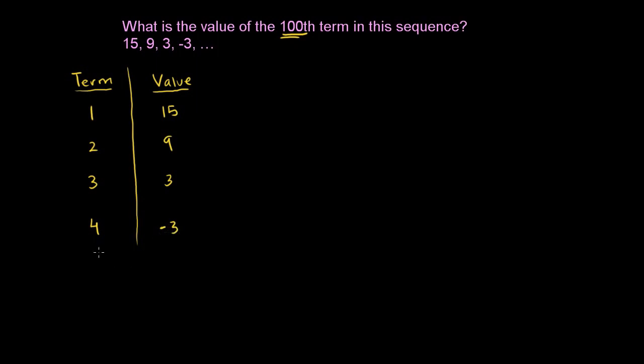They want us to figure out what the 100th term of this sequence is going to be. So let's see what's happening here, if we can discern some type of pattern. From the first term to the second term, 15 to 9, it looks like we went down by 6. It's always good to think about how much the numbers changed by. That's always the simplest type of pattern.